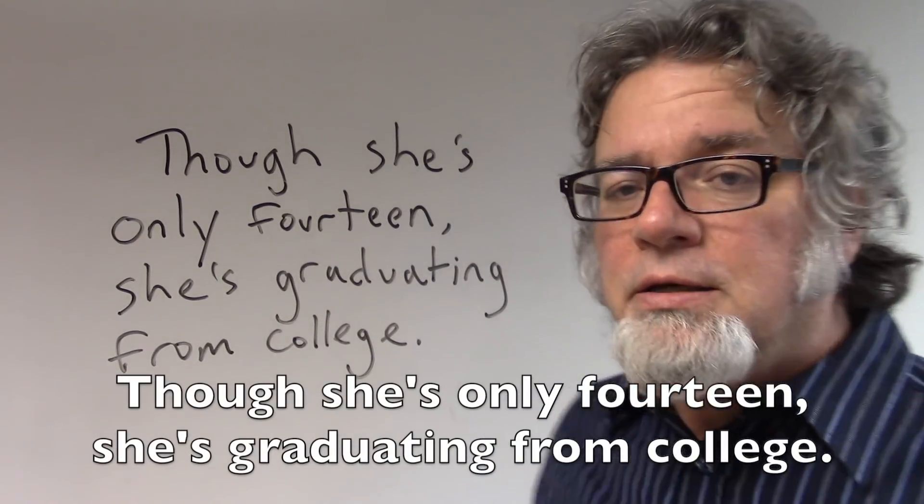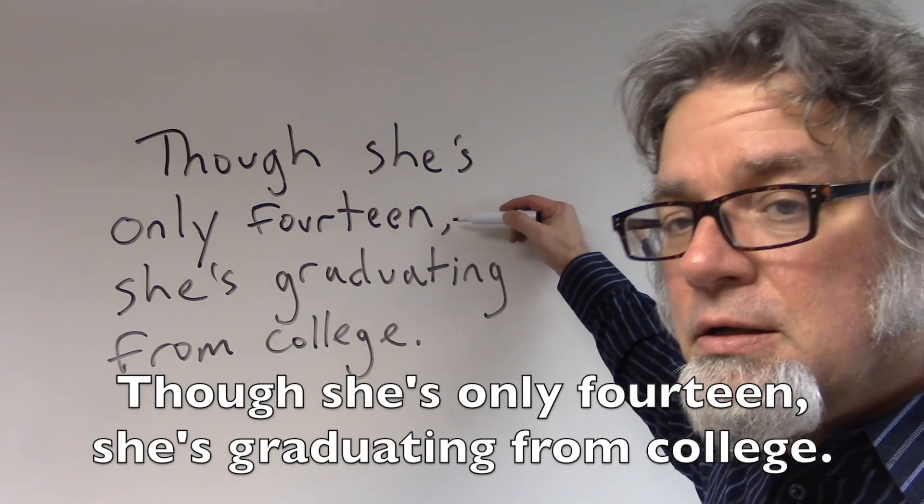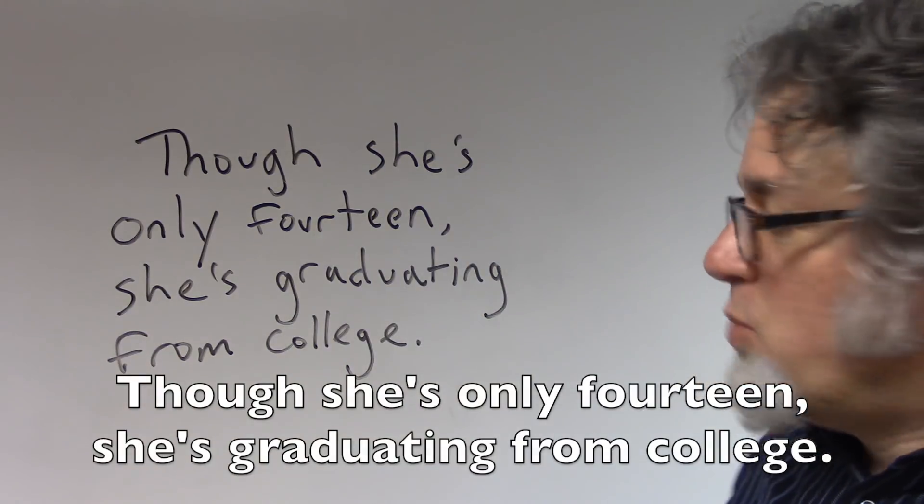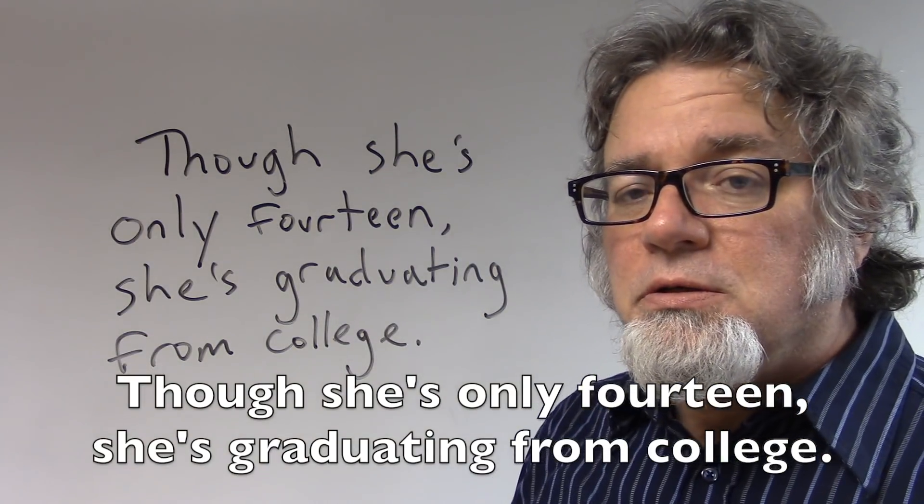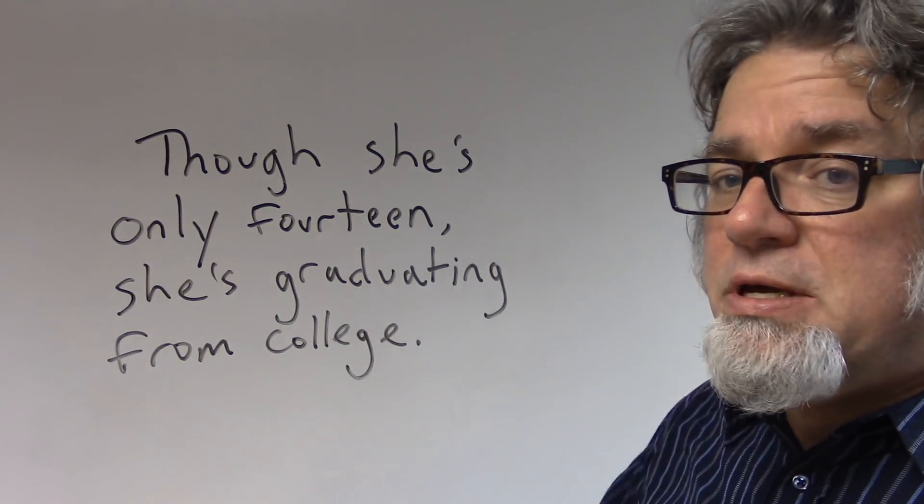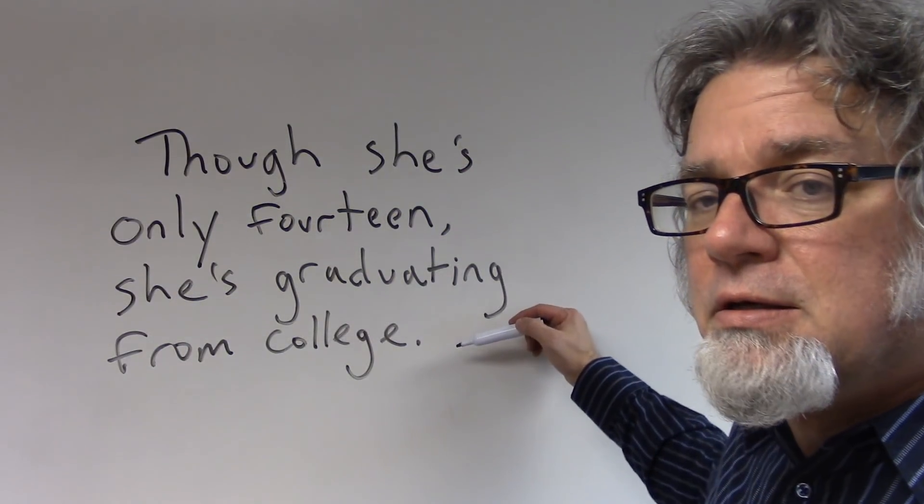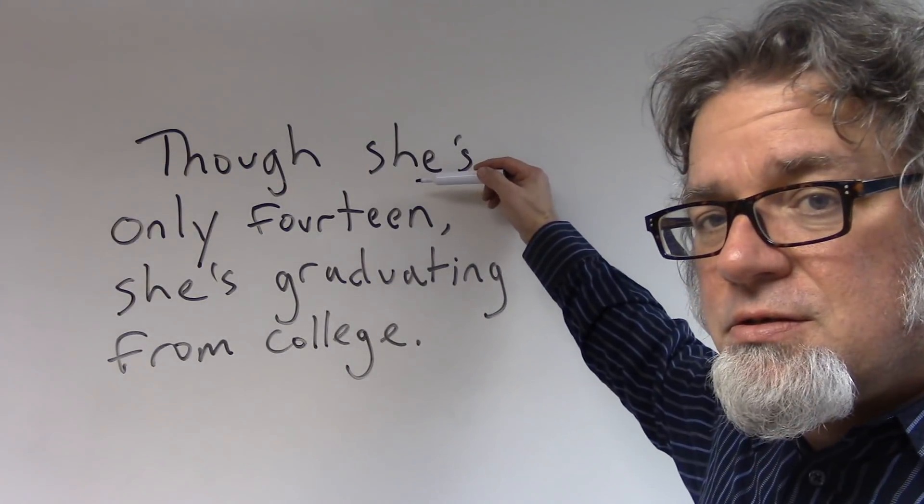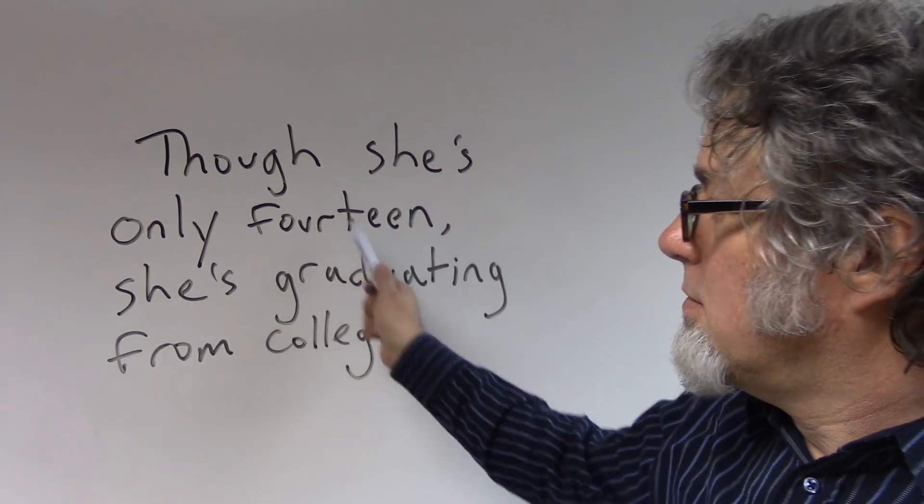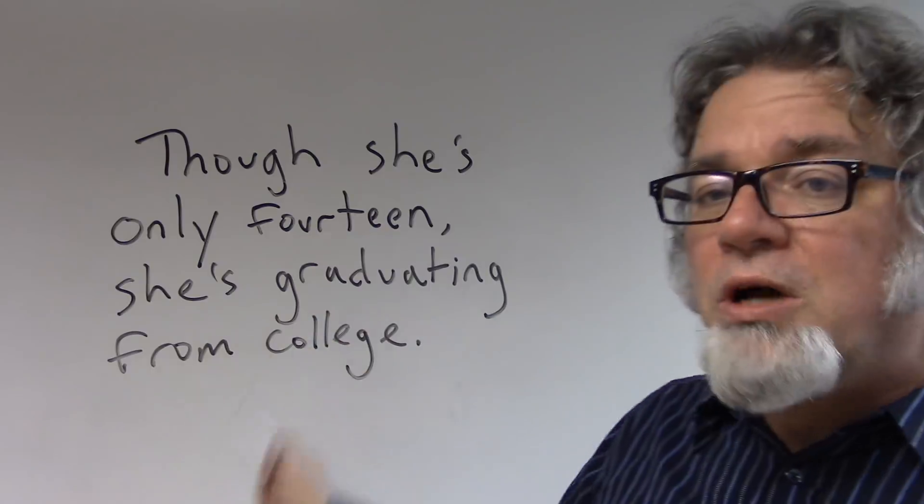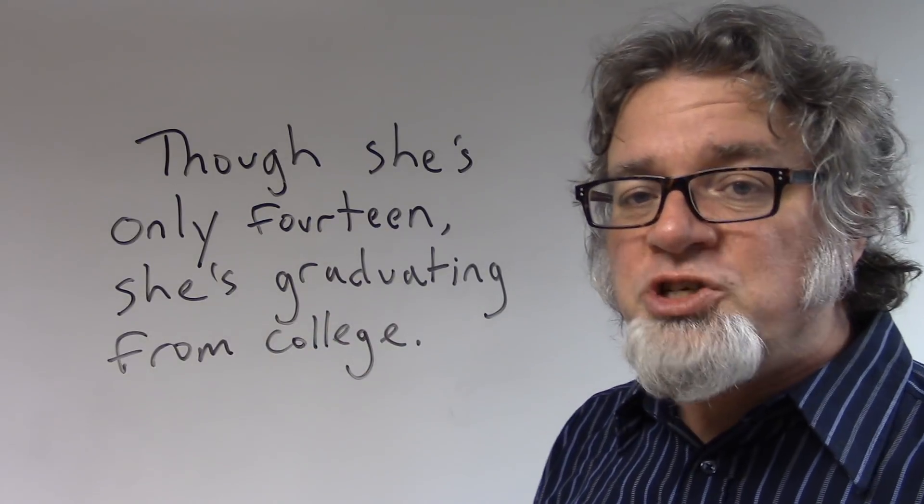Though she's only 14, there's a comma, she's graduating from college. The expectation would be that a 14 year old would not graduate from college yet. So there's that contrast between the age and what she can do or what she has done.